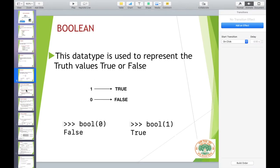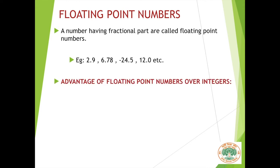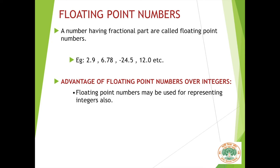Let us go to the next data type which is floating point numbers. A number having a fractional part is called a floating point number. For example, 2.9, 6.78, minus 24.5, 12.0 are all known as floating point numbers. The advantage of floating point numbers over integers is that floating point numbers may also be used for representing integers. So if a variable can take both integers and floating point numbers, you can safely use floating point numbers.